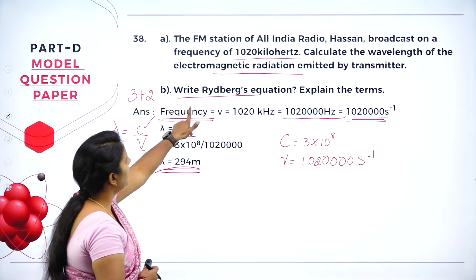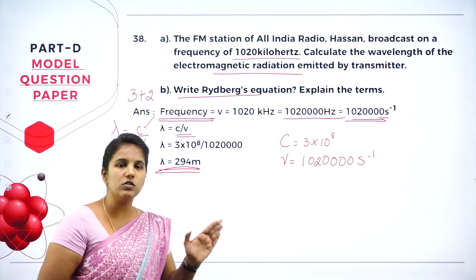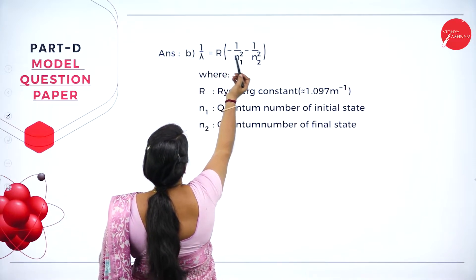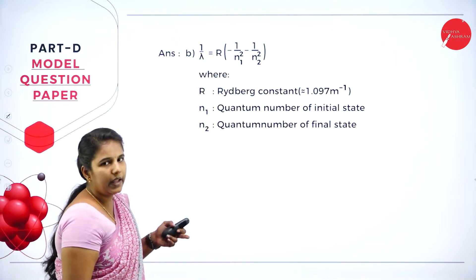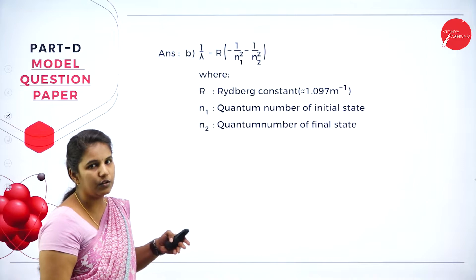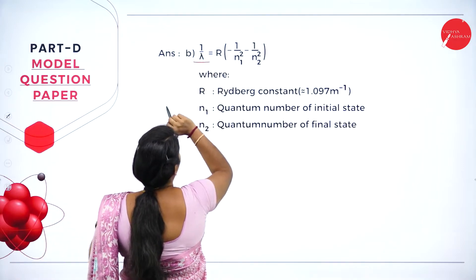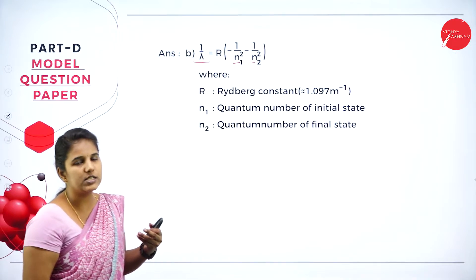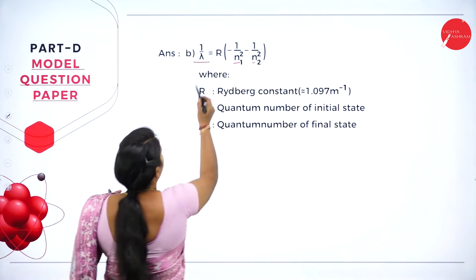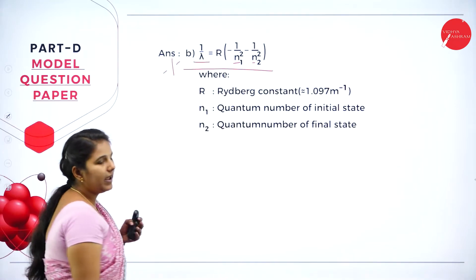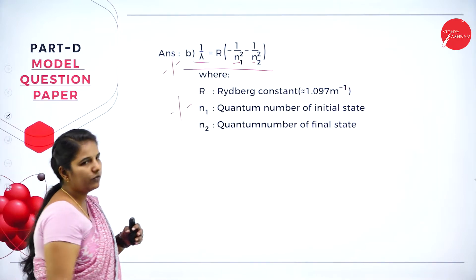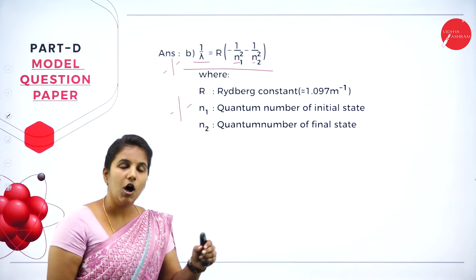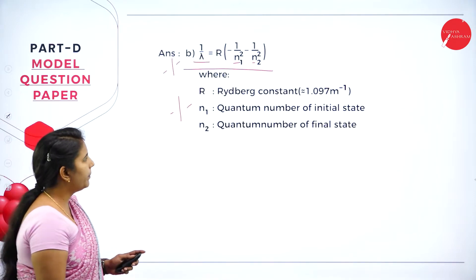The second sub-question: Write the Rydberg equation and explain the terms. The Rydberg equation is 1/λ = R(1/n₁² − 1/n₂²), where λ is the wavelength, R is the Rydberg constant, and n₁ and n₂ represent the quantum numbers of the initial and final states. Writing this equation gives 1 mark; explaining the terms gives 1 mark — totalling 2 marks.